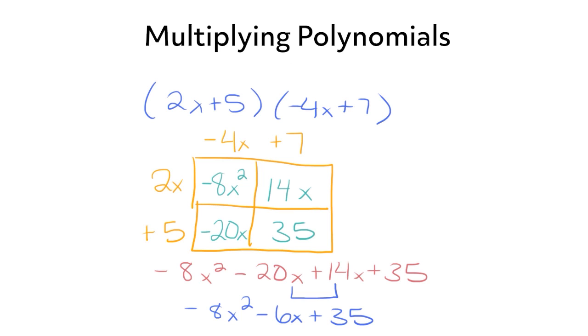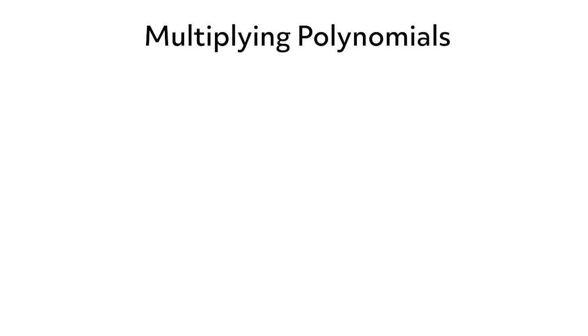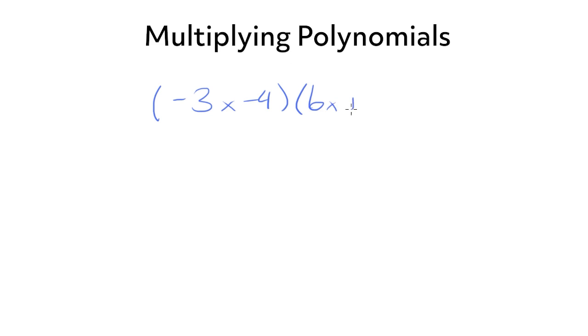So that's the box method. The next method that we're going to use is the FOIL method. So we're going to use the FOIL method to multiply negative 3x minus 4 times 6x plus 5.